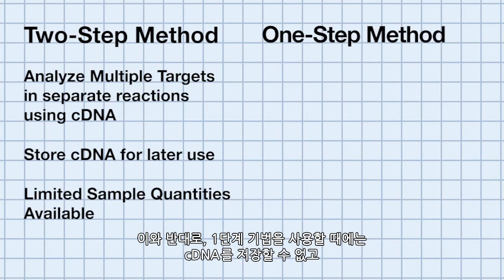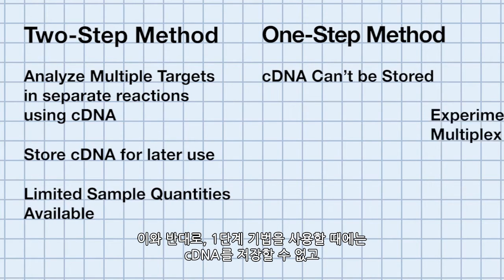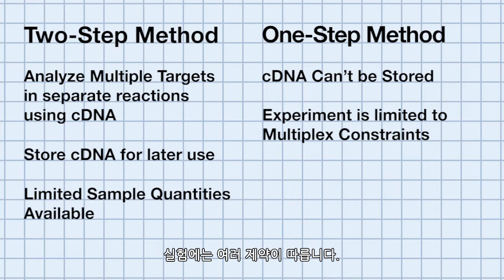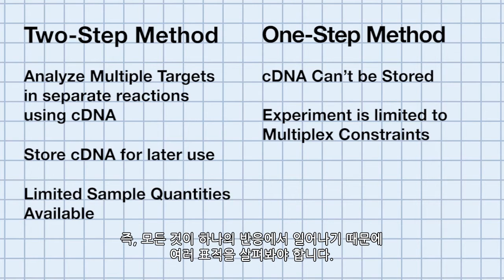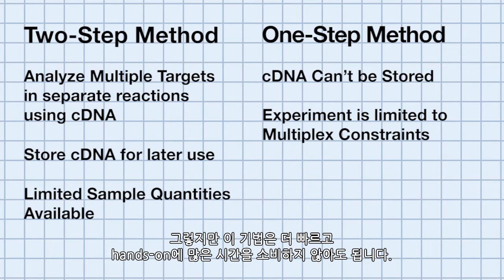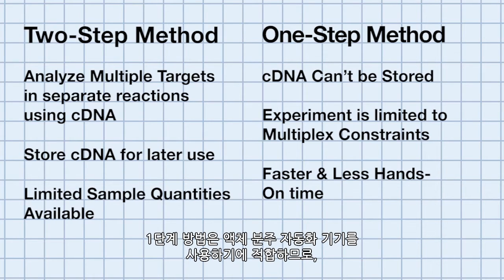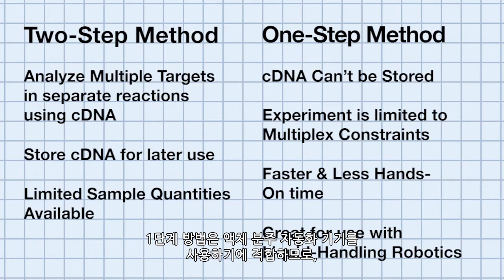Conversely, when using the one-step approach, the cDNA cannot be stored and the experiment is limited to multiplex constraints when looking at multiple targets, because everything occurs in that one reaction. However, this approach is faster and doesn't require as much hands-on time. The one-step method is great for use with liquid handling robotics, which can reduce the chance of cross-contamination and pipetting errors.